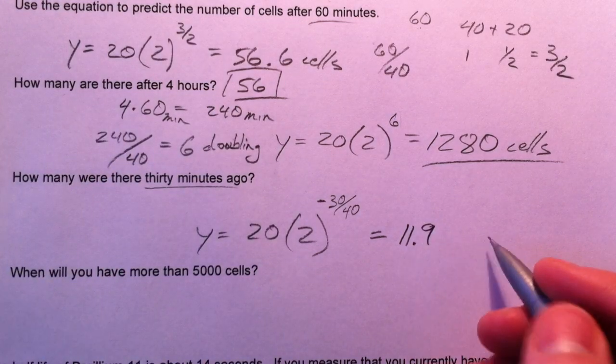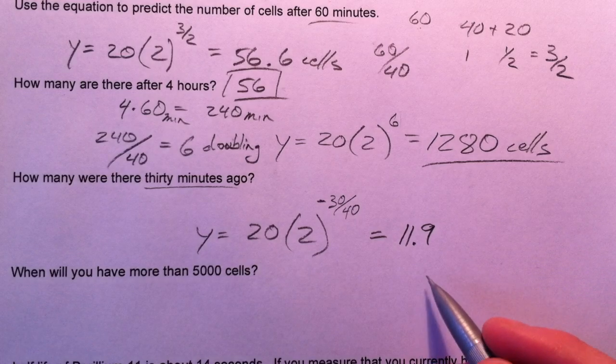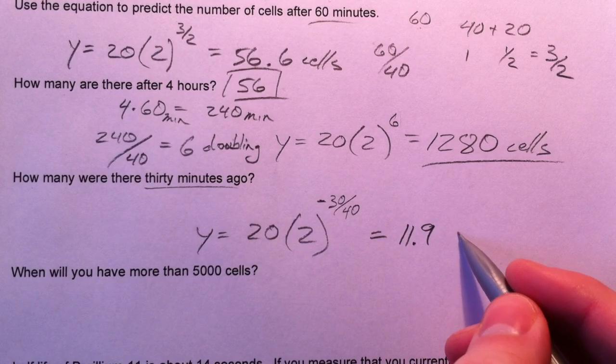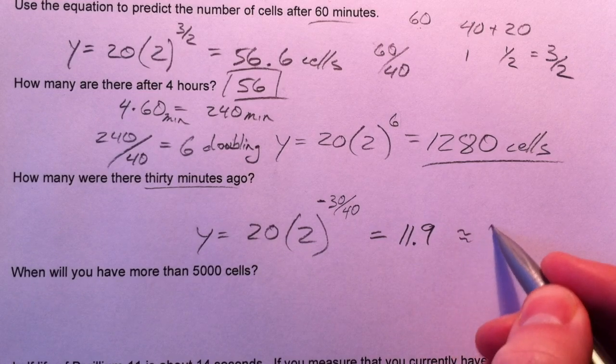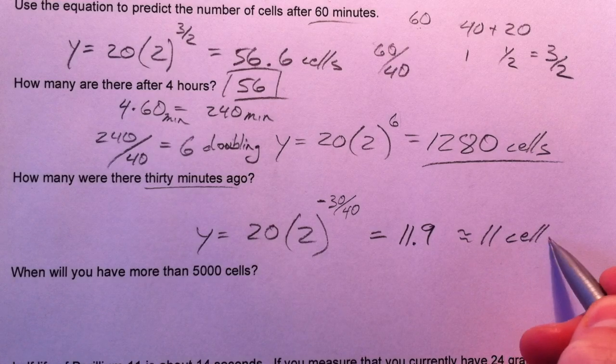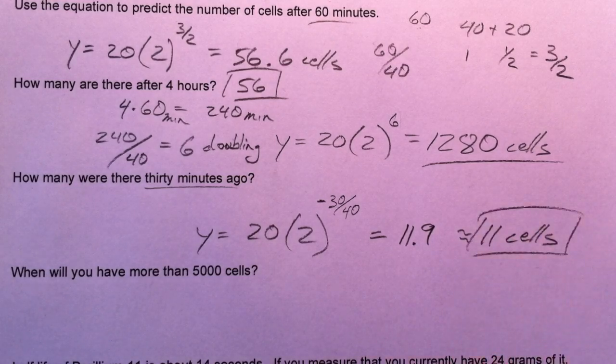So we had about 11 cells — not quite 12 but 11 cells.